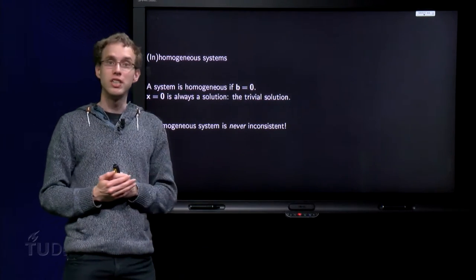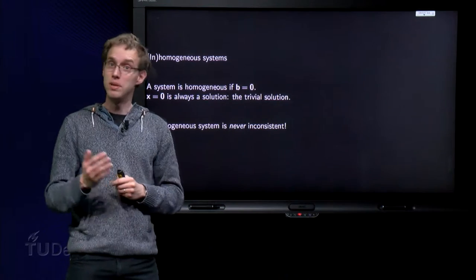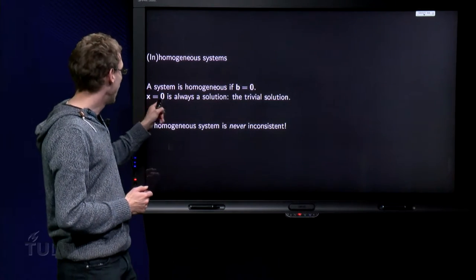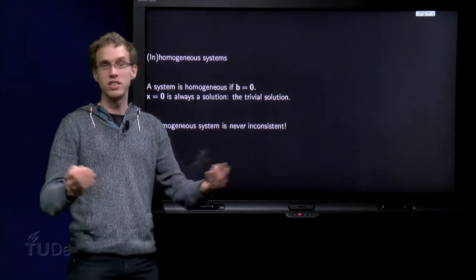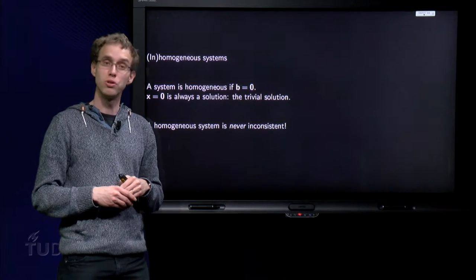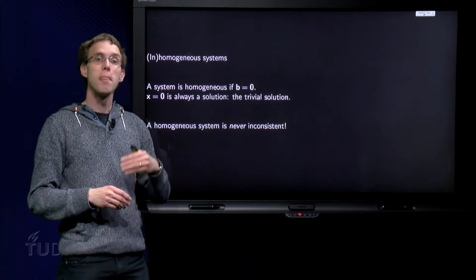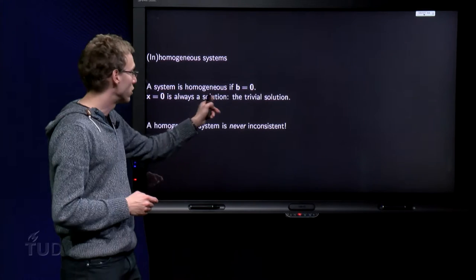A homogeneous system is whenever the right-hand side b equals zero. x equals zero is always a solution of such a system, and this solution is called the trivial solution.